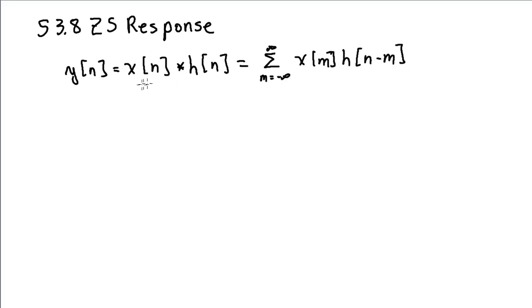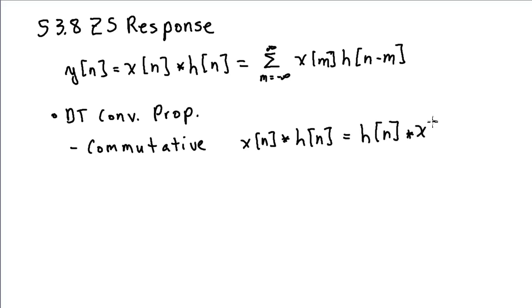This is discrete-time convolution. I'll typically write that more concisely like this. Let's talk about some discrete-time convolution properties. You'll be using these quite frequently in solving problems. Discrete-time convolution is commutative, so x of n convolved with h of n is equal to h of n convolved with x of n. I can actually interchange x and h in the summation above, and I'll get exactly the same output.